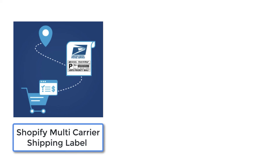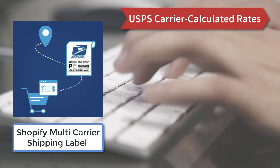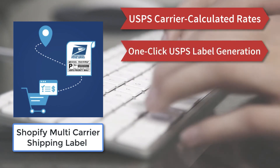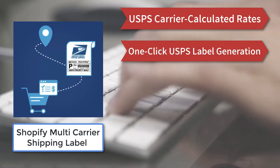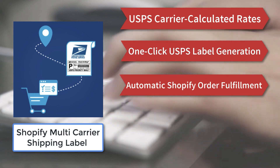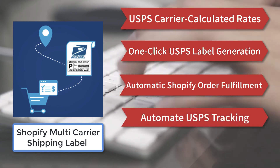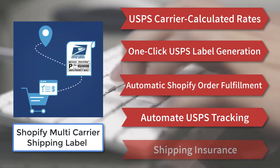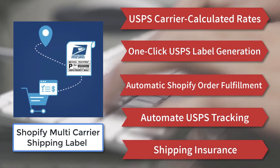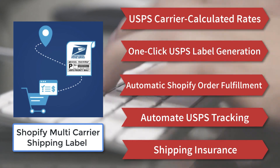The app not only helps you in displaying USPS carrier calculated rates, but also helps with one-click USPS shipping label generation, automatic Shopify order fulfillment along with the USPS tracking number, automating USPS tracking, and shipping insurance. With all these features, you can automate the entire shipping process and reduce order fulfillment time.